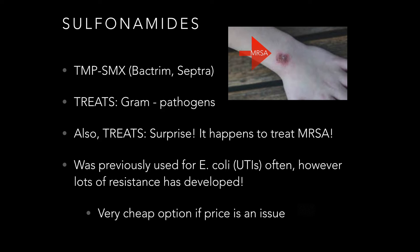The next drug class is the sulfonamides — better known as Bactrim. These only treat gram-negative pathogens. But surprisingly, we found out that Bactrim also has a really great effect on treating MRSA. I have a picture here of MRSA — usually there is purulent drainage. It was previously used for E. coli and UTIs quite often, but lots of resistance has developed. If price is an issue, it's an old and very cheap drug, but it's not very effective for UTIs anymore — but for MRSA, it is.